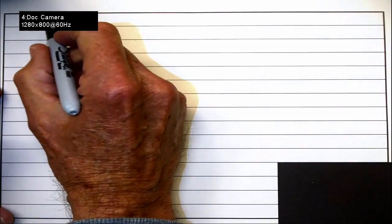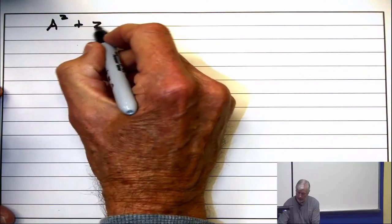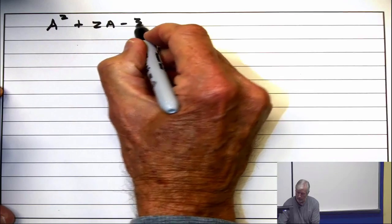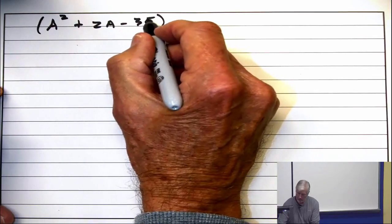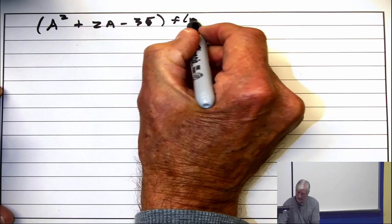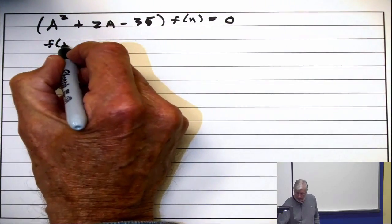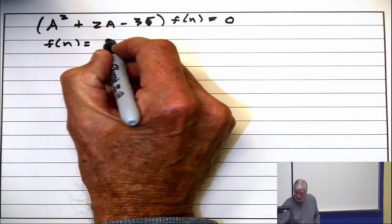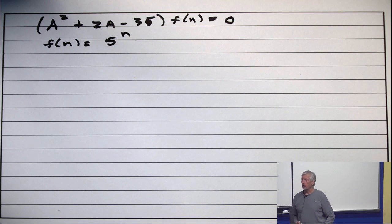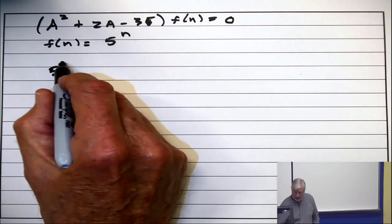I think the equation was A squared plus 2A minus 35 on F equals 0. Now, let's take the function F of N equals 5 to the N and verify that it's a solution. So, apply A squared to 5 to the N. What do you get? 5 to the N plus 2.